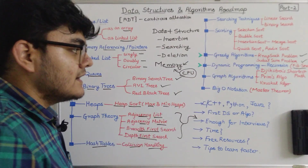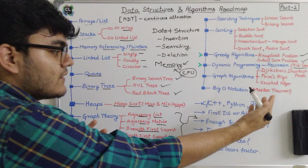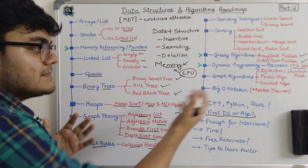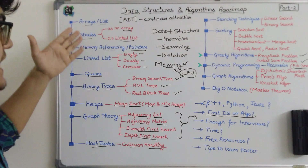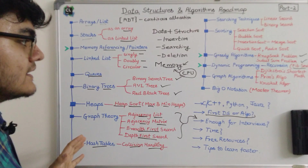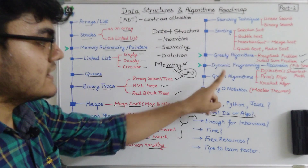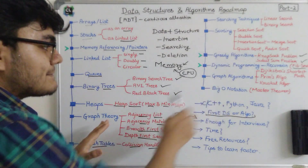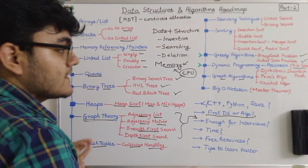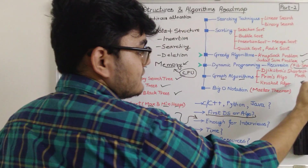Then we have graph algorithms. An important note: what should you start first — data structures or algorithms? The answer is you can do them in parallel. While studying arrays and stacks you can also study searching and sorting. However, you will first have to study graph theory before you study graph algorithms — you cannot do them in parallel.